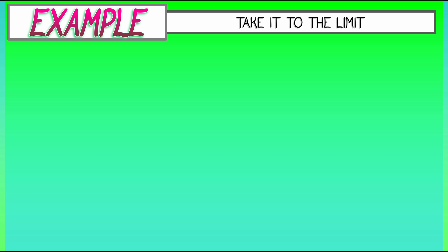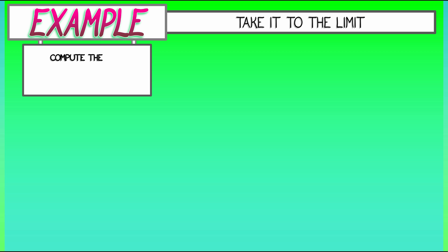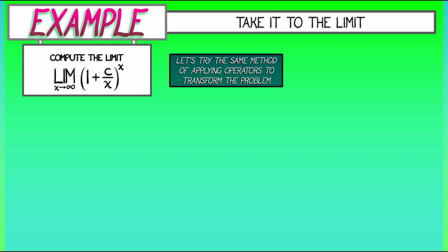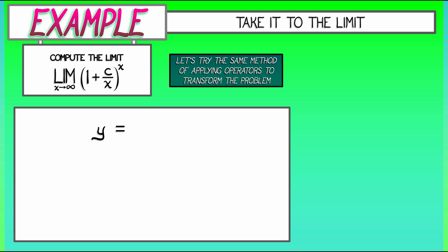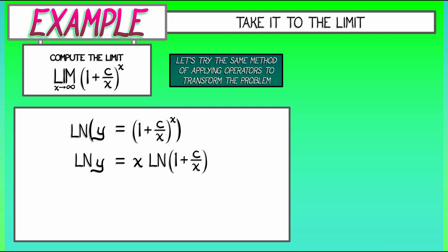Consider the following example where what we're computing is not a derivative but a limit: the limit as x goes to infinity of the quantity 1 plus c over x, raised to the x power, where c is some constant. Let's apply operators to transform this into something more tractable. Just as before, let's set y equal to the quantity 1 plus c over x to the x power. To take care of that exponent, let's apply the log operator to both sides. On the left, log of y. On the right, x times log of quantity 1 plus c over x.